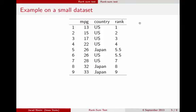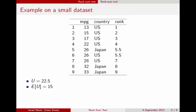The first step in calculating the test statistic is to take the Japanese cars, because there are only three Japanese cars — the group with the smaller sample size — and add together their ranks: 9 plus 8 plus 5.5, which equals 22.5. Then we find the expected value of U, which is 3 times the average rank. The average rank here is 5, so 3 times 5 is 15. Then we calculate the standard deviation of U, which is the standard deviation of the ranks times the square root of a function of the sample sizes.